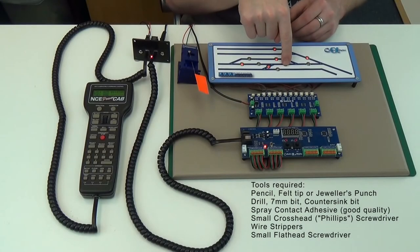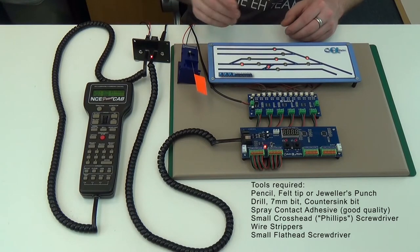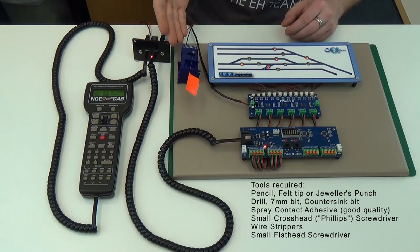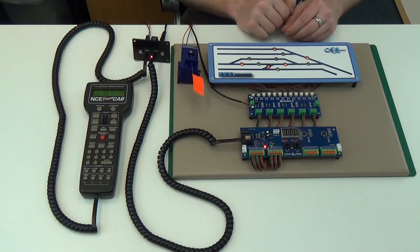In this video we'll connect the alpha switch, in this case an alpha switch D, to an alpha encoder unit or AEU. In turn we connect this to a DCC system and then control a cobalt IP digital point motor.